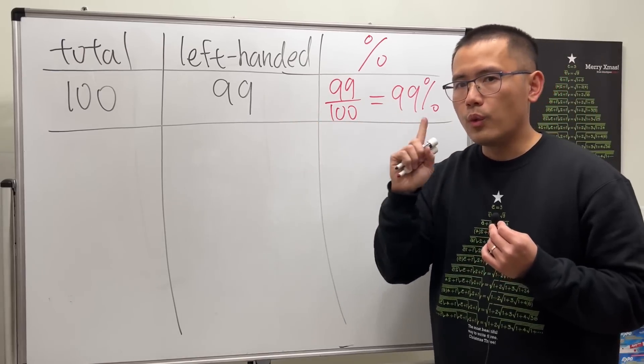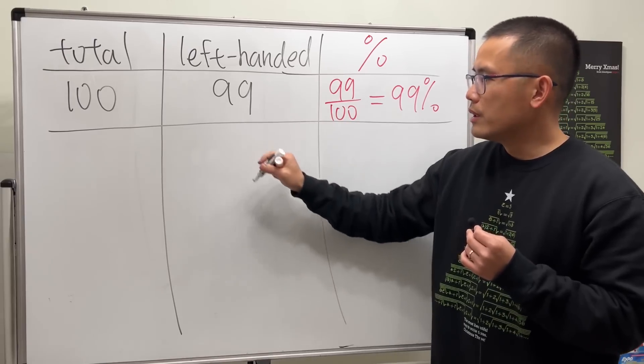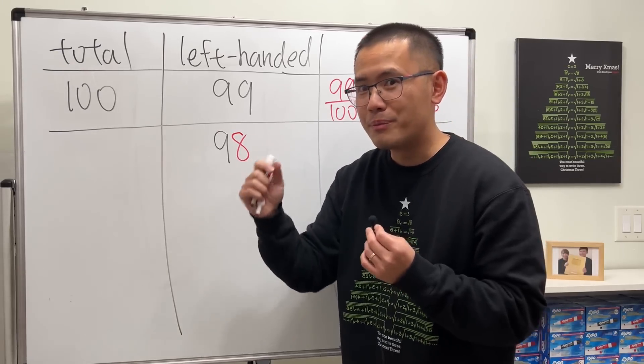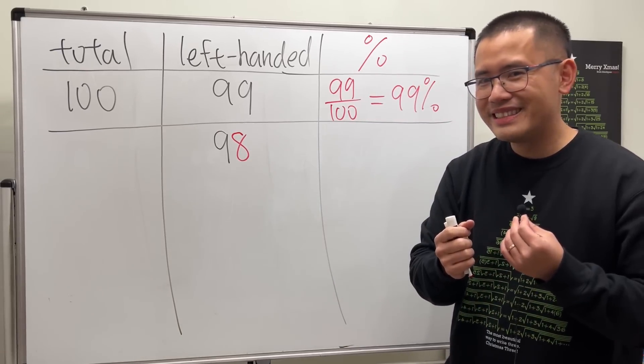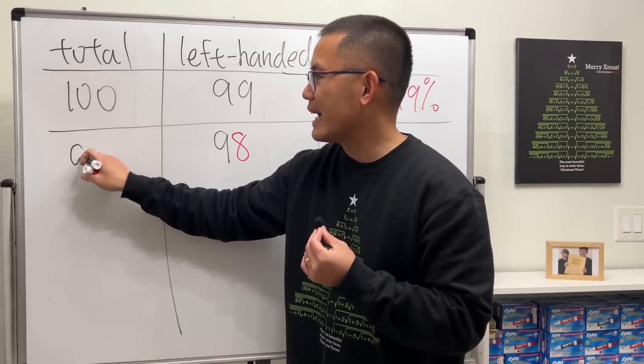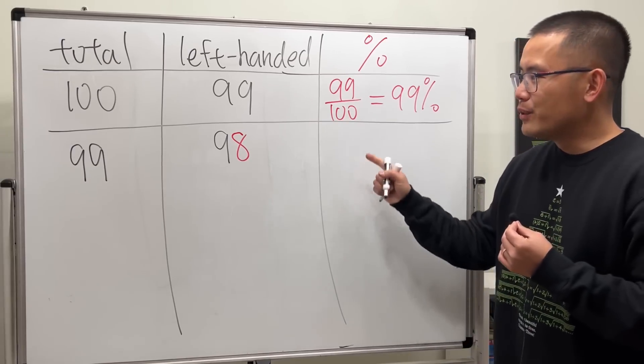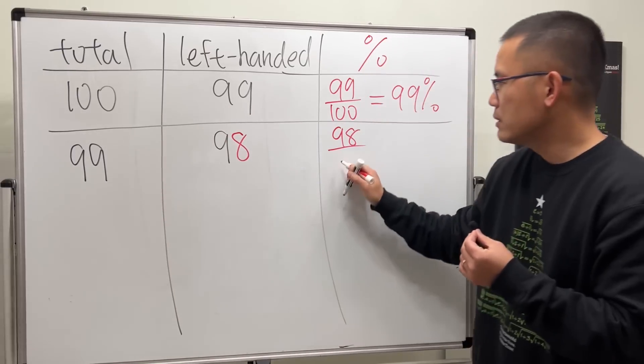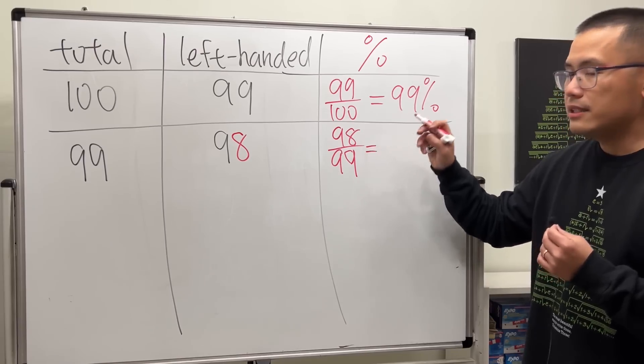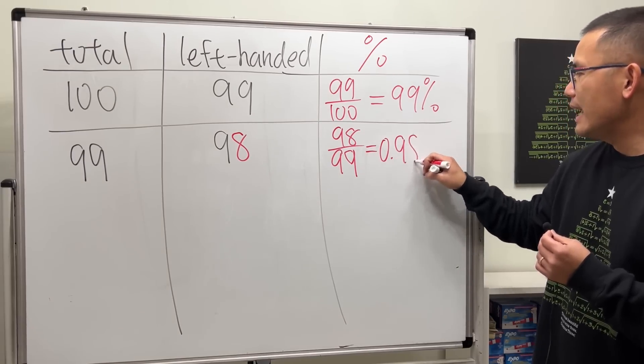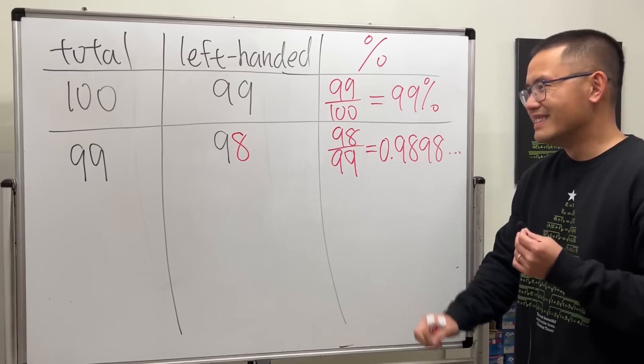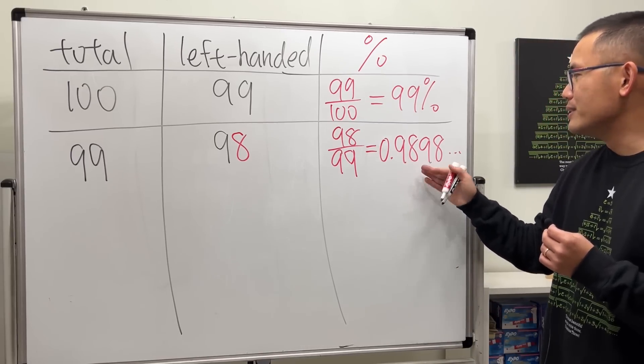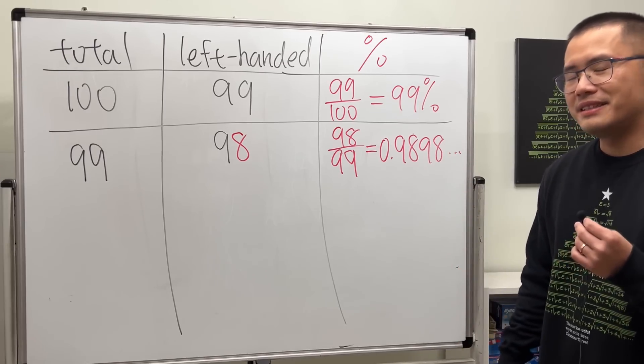Well, if you're going to just take away one person from the left-handed group, this will go down to 98. But what's the total number of people in the room now? Remember, you remove one person from the room, so it's no longer 100 anymore, but rather you will have 99. If you do the percentage here, you have to do the number of left-handed people divided by the total. When you divide, you end up with 0.9898 repeating, so it's still about 98.98%, not quite 98%.